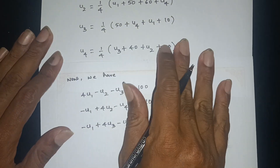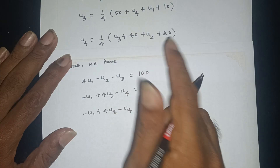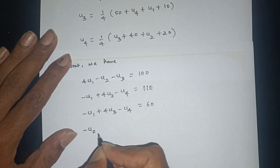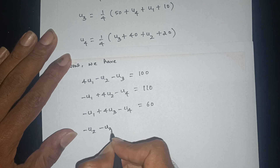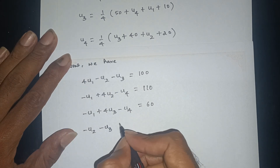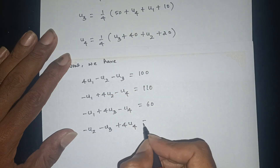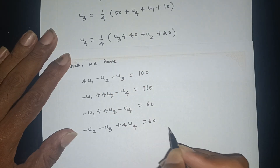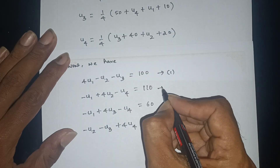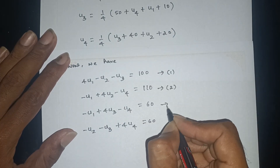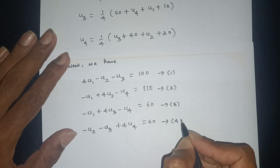Next, for u4: using u3, u2. 4u4 is derived from the neighboring boundary values. 40 plus 20 is 60. This gives equation 1, equation 2, equation 3, and equation 4.